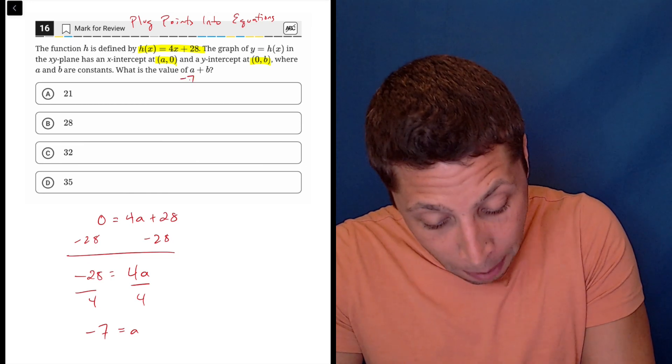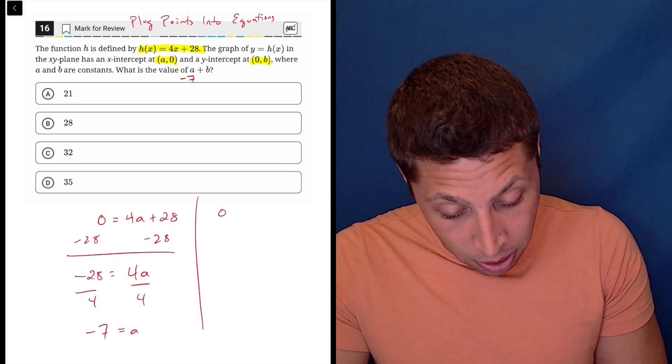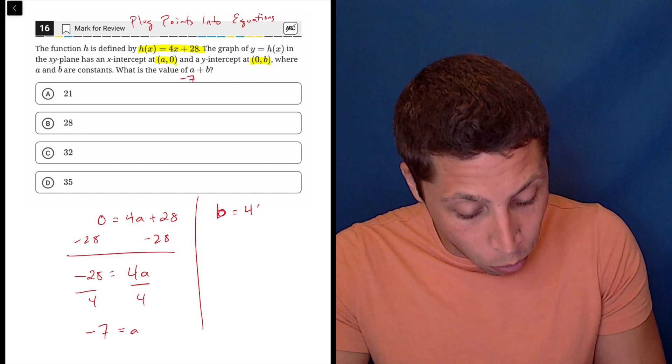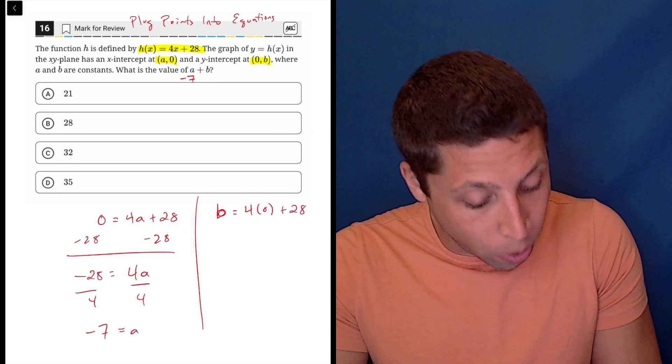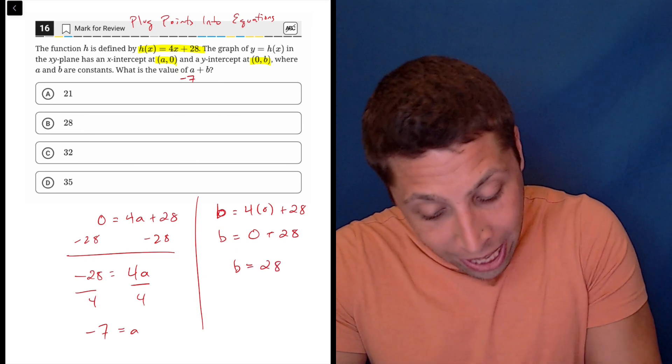So mission accomplished for at least the first half. Then for the second part, take that second point, and 0 is x, so b, ugly b, is equal to 4 times 0 plus 28. So b is equal to 0 plus 28. So b is 28.